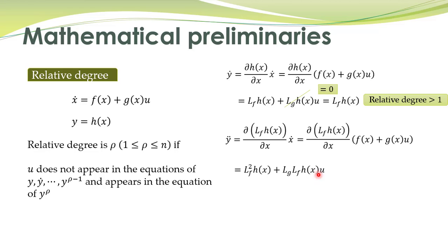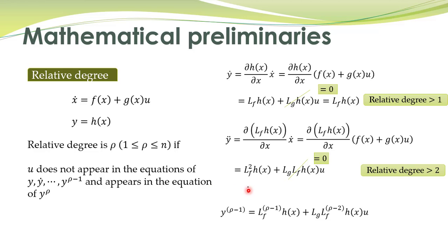In general, we can extend the same concept. The rho minus first derivative of y with respect to time equals L_f^(ρ-1) h(x) plus L_g L_f^(ρ-2) h(x) times u. If relative degree is rho, the control input will not appear in this equation either — that is, L_g L_f^(ρ-2) h(x) will equal zero. And for the rho-th derivative of y, again by a similar extension, the control input will appear in this equation, meaning L_g L_f^(ρ-1) h(x) is not equal to zero.